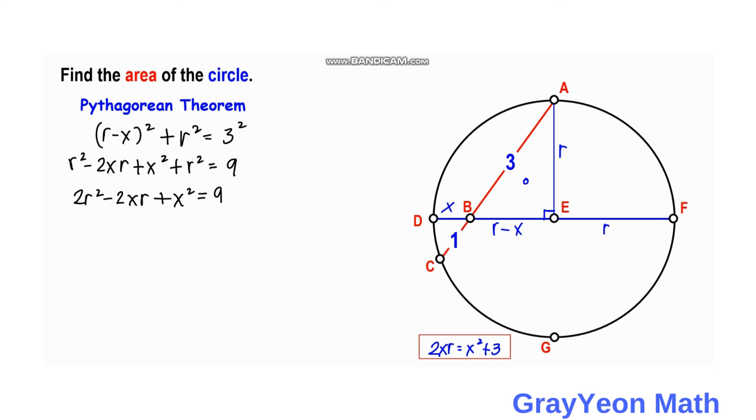We substitute 2XR with X squared plus 3 from the intersecting chords equation. This gives us 2R squared minus (X squared plus 3) minus 3 plus X squared equals 9.